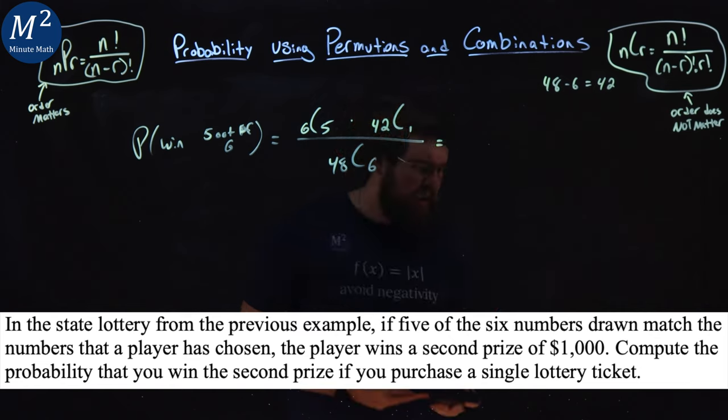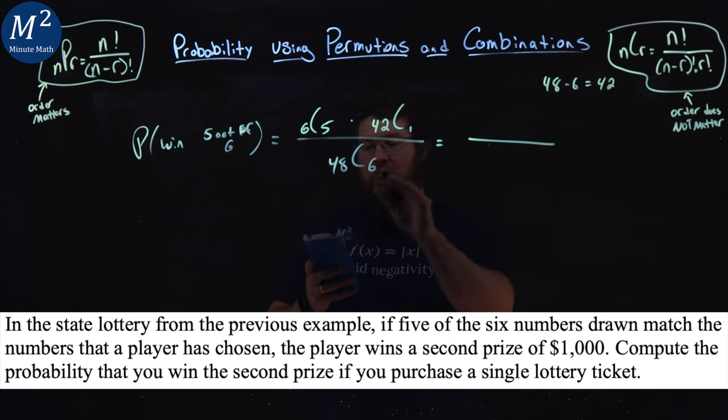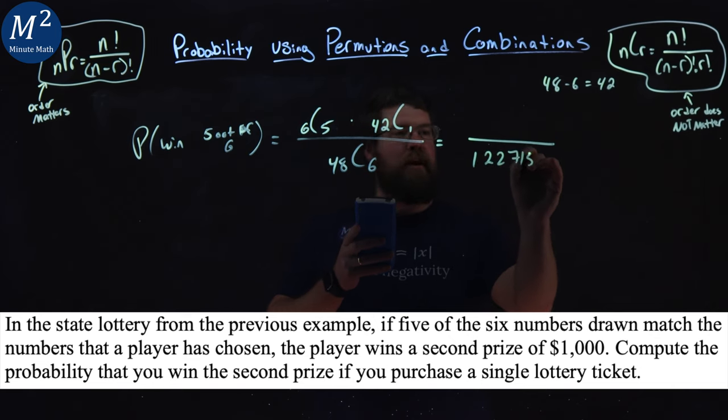So if we multiply this out, we can use our calculator here. The denominator, the bottom we've calculated before, 48 choose 6, was 12,271,512.